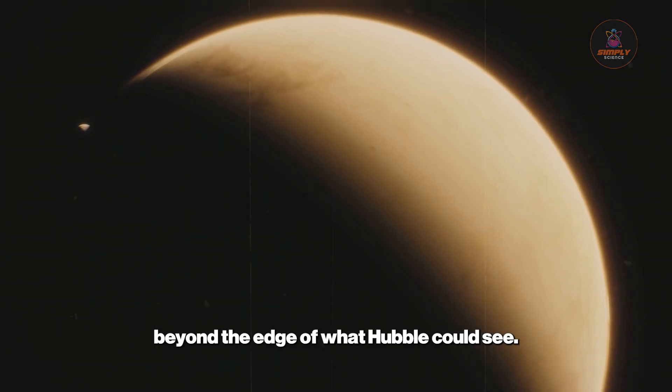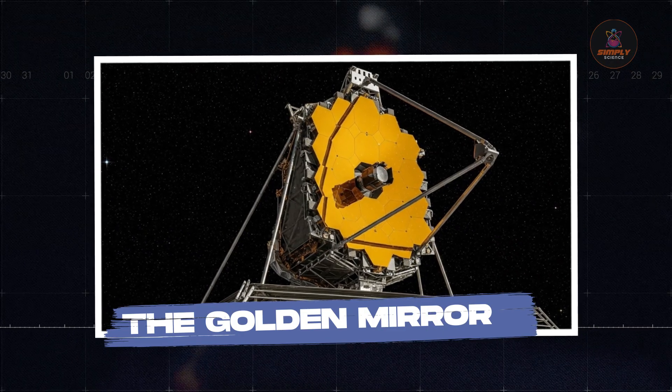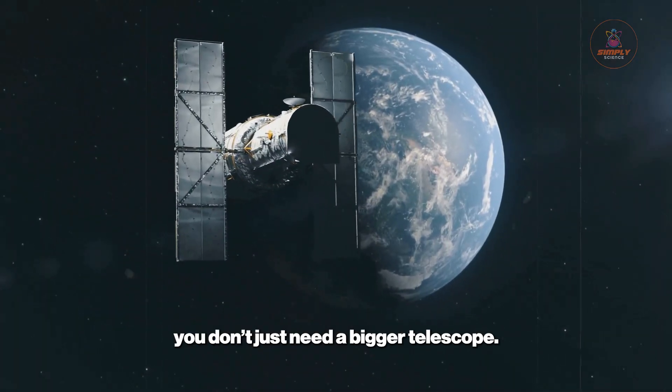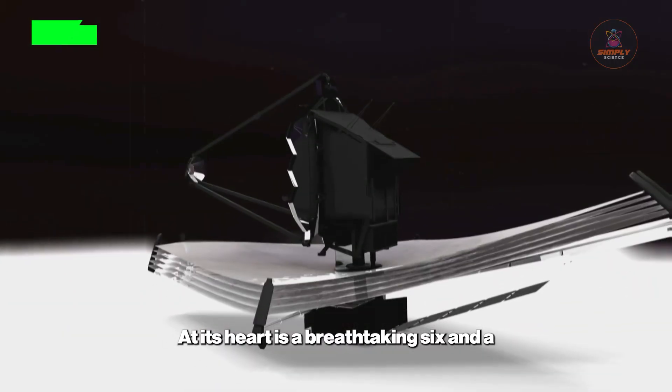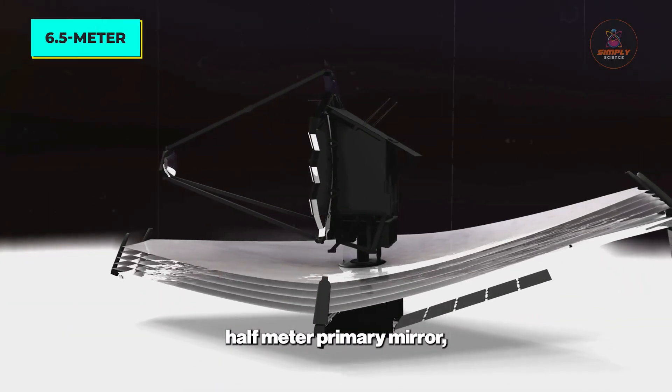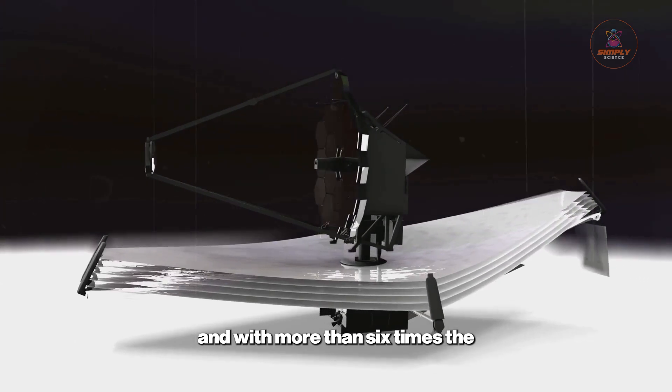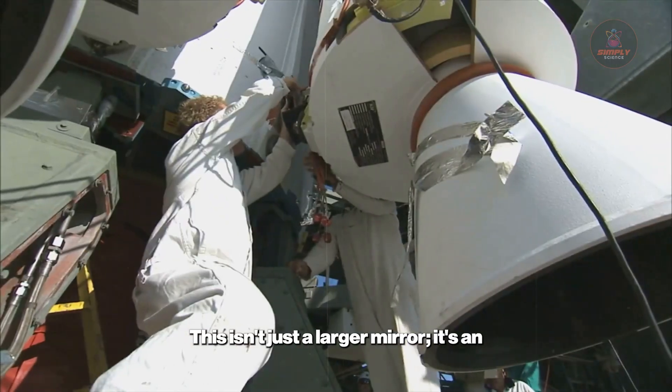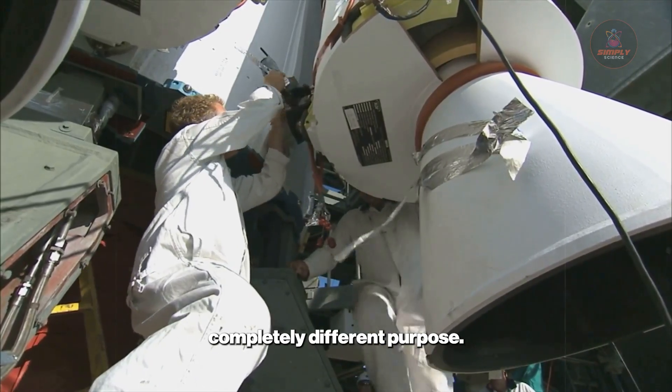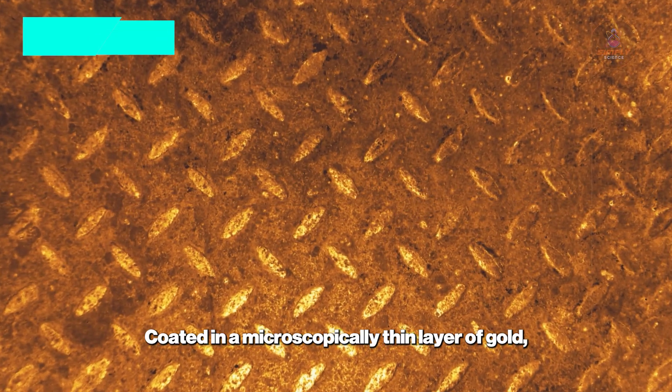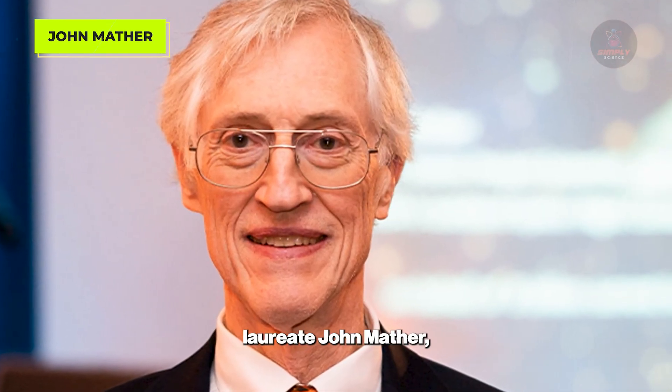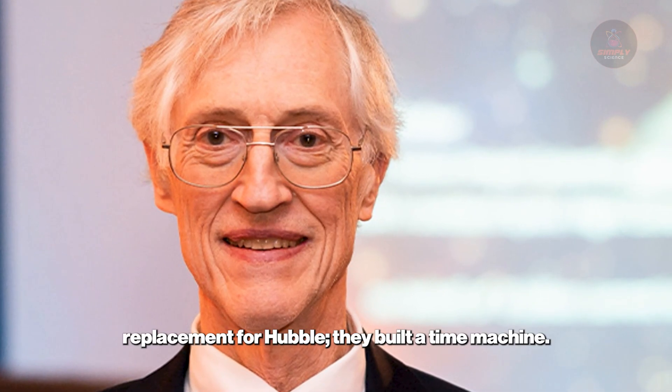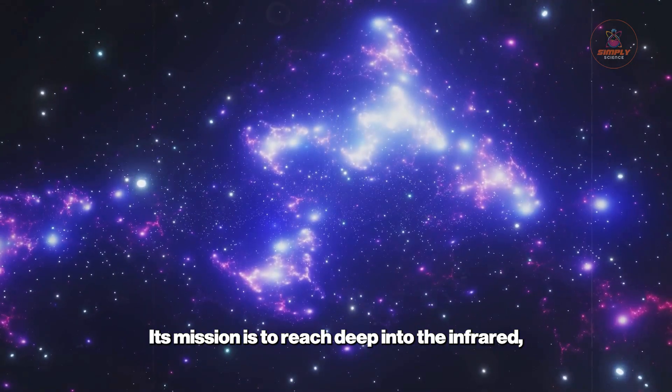To see what Hubble couldn't, you don't just need a bigger telescope—you need a different kind of eye. Enter the James Webb Space Telescope. At its heart is a breathtaking 6.5-meter primary mirror, nearly three times wider than Hubble's and with more than six times the light-gathering area. This isn't just a larger mirror—it's an engineering marvel designed for a completely different purpose. Coated in a microscopically thin layer of gold, the 18 hexagonal segments are optimized to reflect infrared light with extreme efficiency. Led by senior project scientist and Nobel laureate John Mather, the team behind Webb didn't build a replacement for Hubble—they built a time machine.